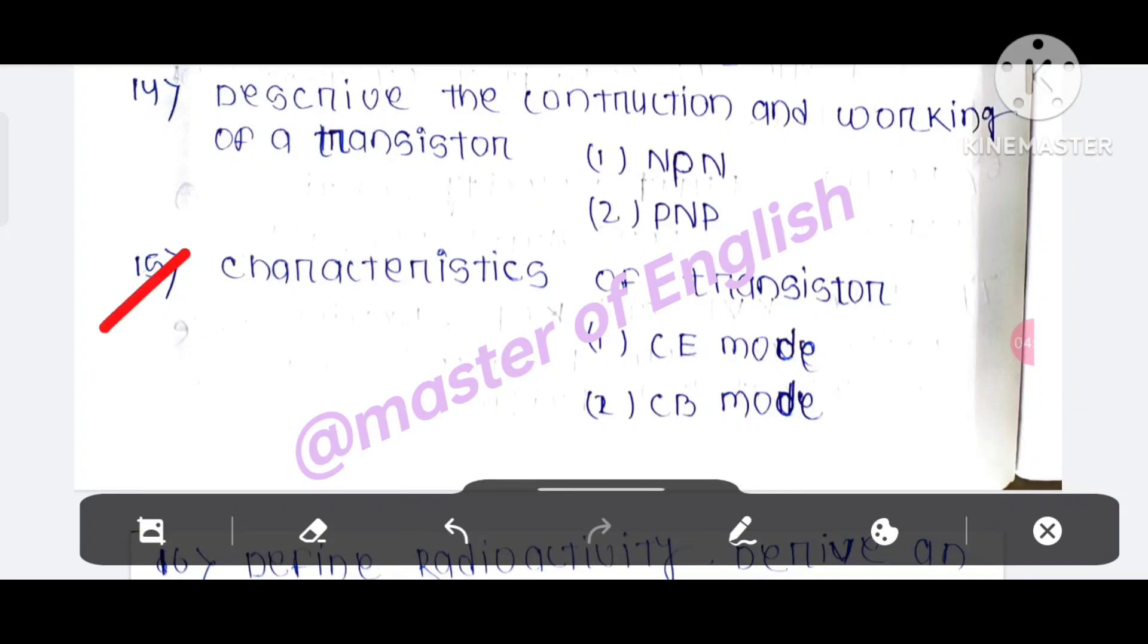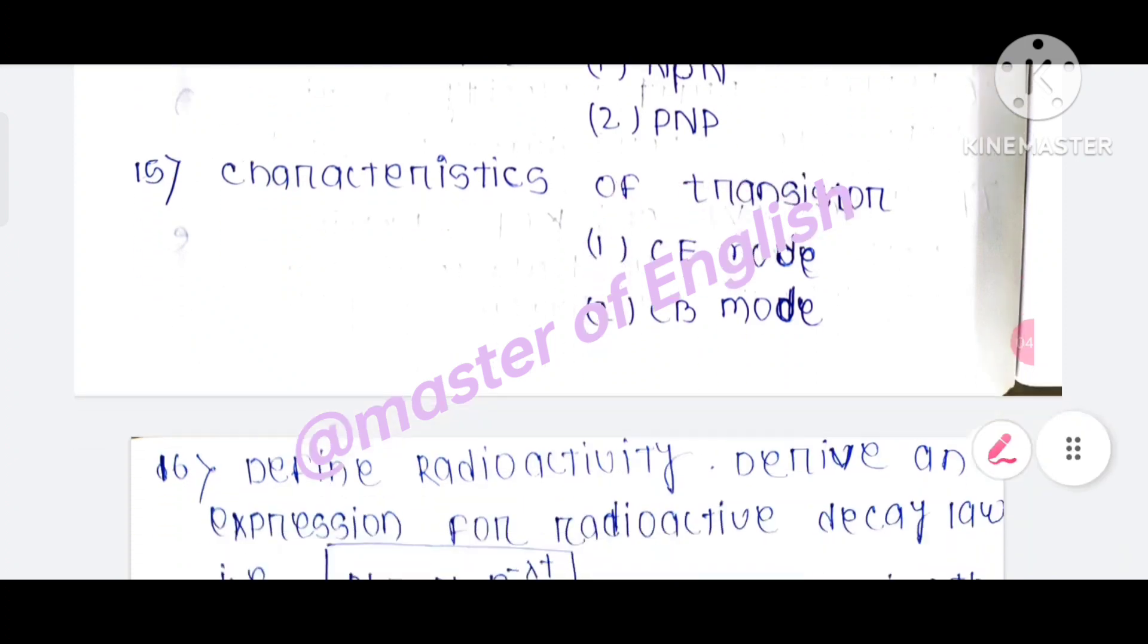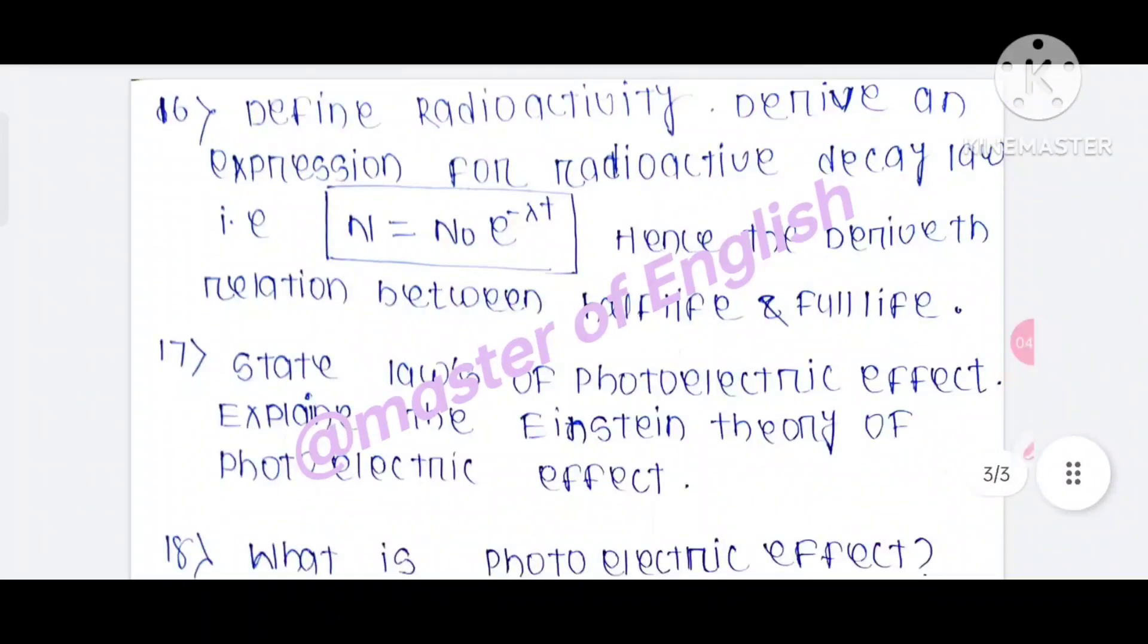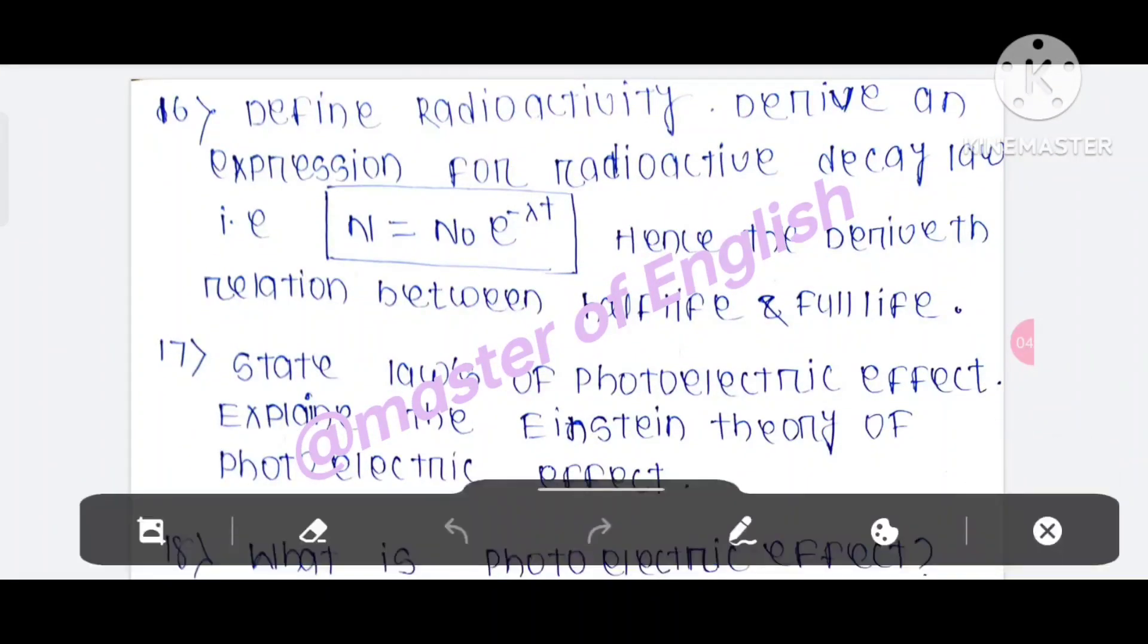Question number 16: define radioactivity, derive an expression for radioactive decay law, that is N equals N0 e to the power minus lambda t. Hence derive the relation between half life and full life.